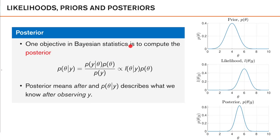One of the main objectives in Bayesian statistics is to compute the posterior density, written as p(theta|y). Posterior means after, and p(theta|y) describes what we know about theta after observing y — it summarizes everything we know about theta after our observation. We compute the posterior using Bayes' rule: p(theta|y) is proportional to p(y|theta) times p(theta) divided by p(y). Here p(y|theta) is the likelihood, p(theta) is the prior, and p(y) is just a normalization constant. In many cases we ignore this normalization factor and write the posterior as proportional to the likelihood times the prior.